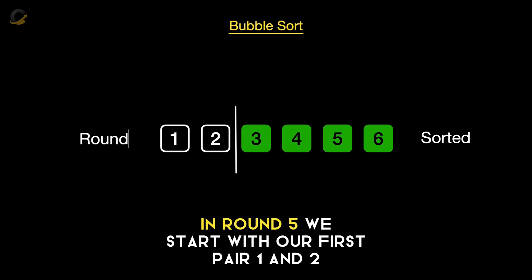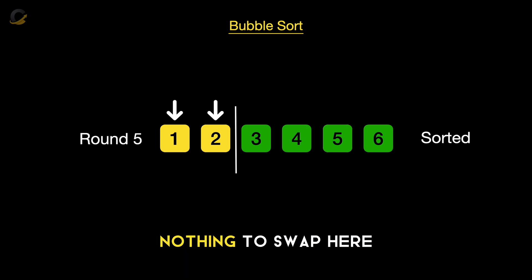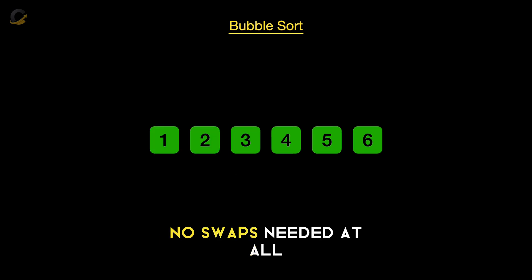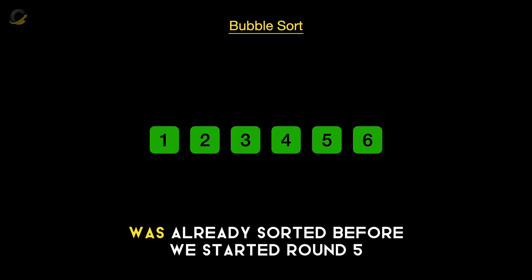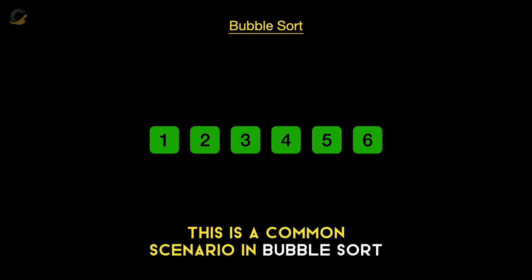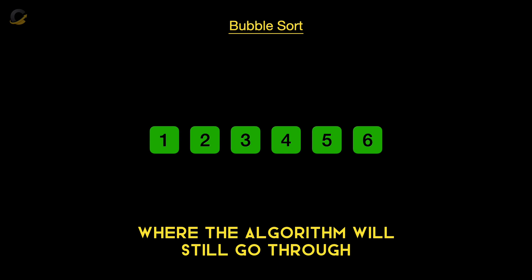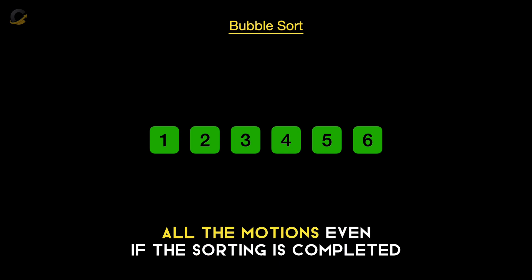In round 5, we start with our first pair, 1 and 2 — they're already in order, nothing to swap. No swaps needed at all, which means our list was already sorted before we started round 5. This is a common scenario in bubble sort, where the algorithm will still go through all the motions even if the sorting is already completed.